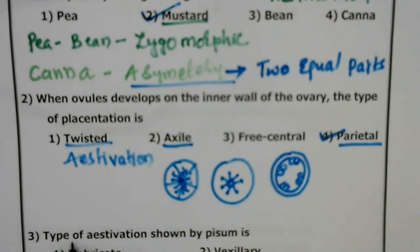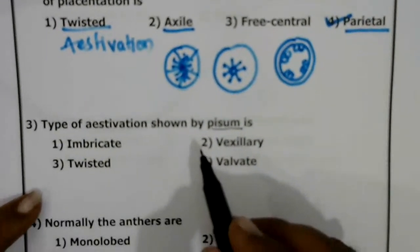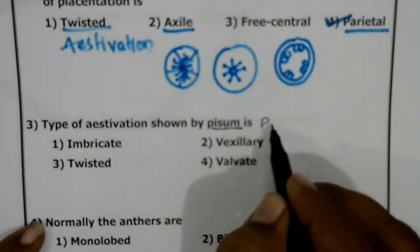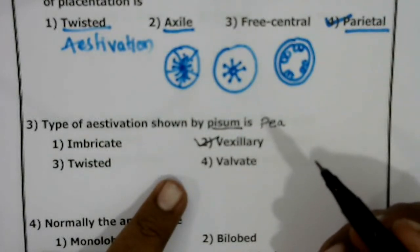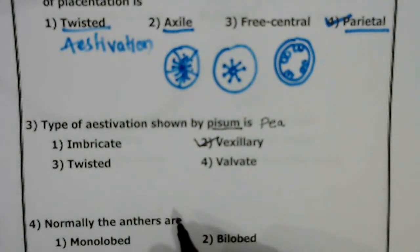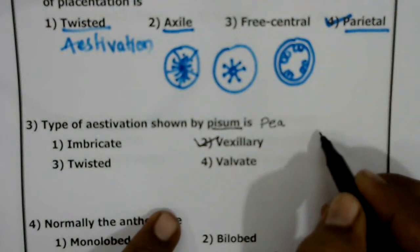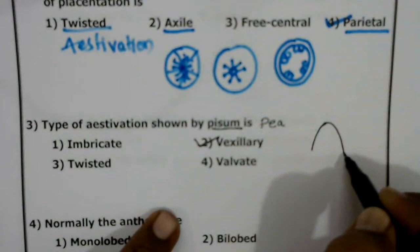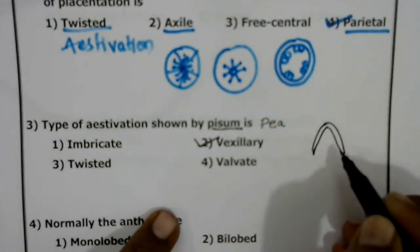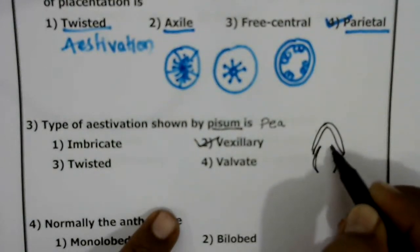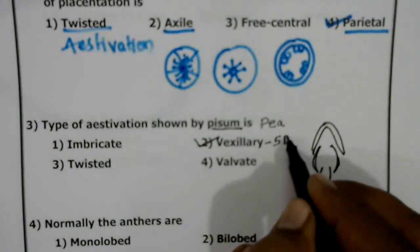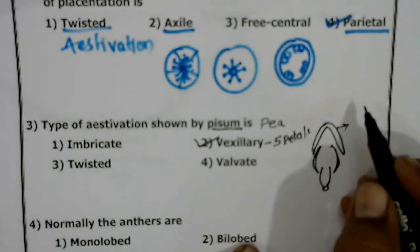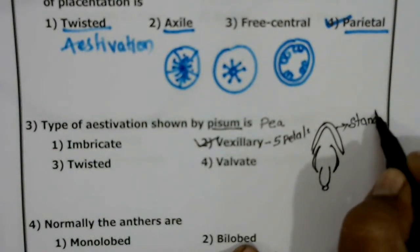The next question: what type of aestivation is shown by Pisum? Pisum is the pea plant. In the pea plant, it shows vexillary aestivation. Vexillary aestivation consists of five petals — one big petal called the standard.